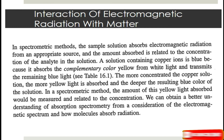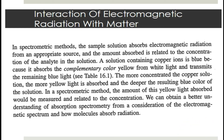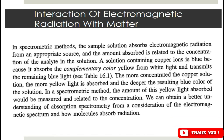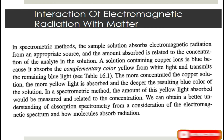In spectroscopic methods, the sample solution absorbs electromagnetic radiation from an appropriate source and the amount absorbed is related to the concentration of the analyte in the solution. For example, a solution containing copper ions is blue because it absorbs the complementary color yellow from white light and transmits the remaining blue light. The more concentrated the copper solution, the more yellow light is absorbed and the deeper the resulting blue color. In this way the amount of yellow light absorbed can be measured and related to concentration — this is the basis of absorption spectrometry.